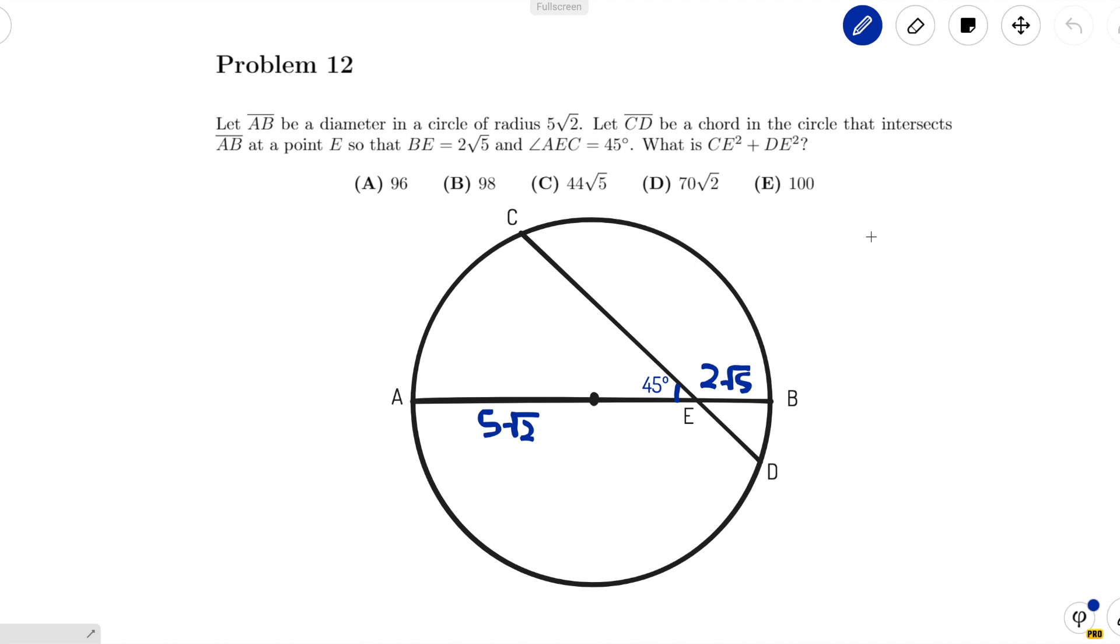The problem reads, let AB be a diameter in a circle of radius 5 root 2. Let CD be a chord in the circle that intersects AB at a point E so that BE equals 2 root 5 and angle AEC equals 45 degrees, as I've shown in this diagram. What is CE squared plus DE squared?